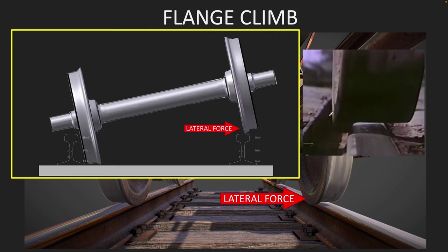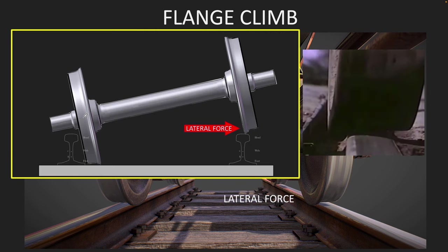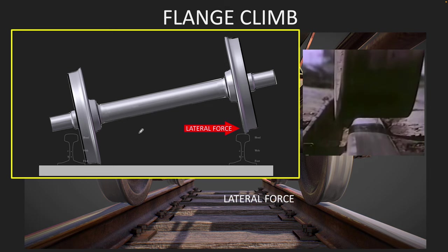Here your flange has climbed the rail and when your flange climbs the rail, the other wheel drops and then your train derails.